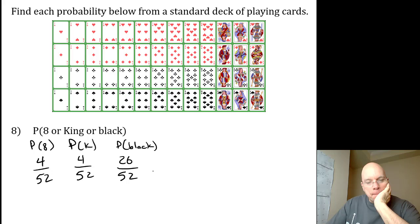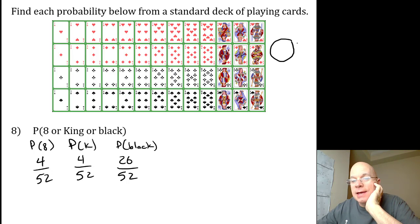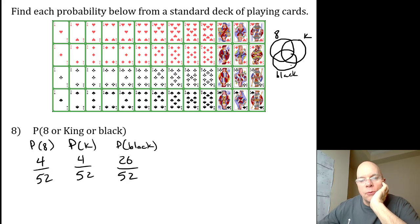Here's where it gets a bit confusing. If I actually made a Venn diagram for these three categories of cards - eights, kings, and black cards - we have to realize that there are four intersections.